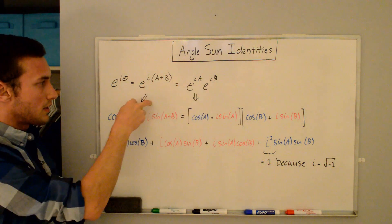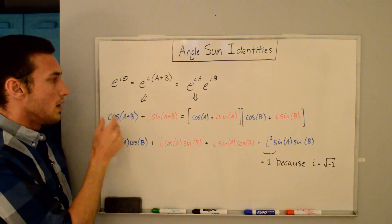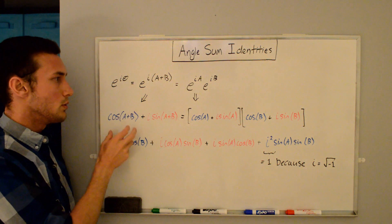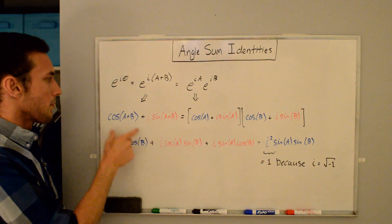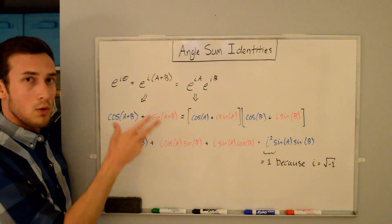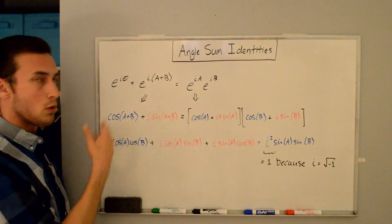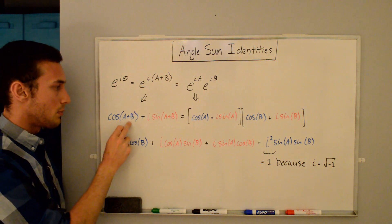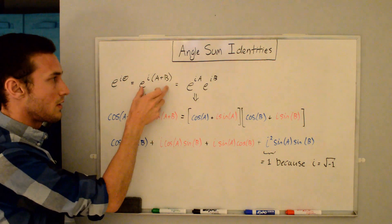And so I'm going to bring this down here, and I'm going to color code this so that all of the real parts are in blue and all of the imaginary parts are in red. So since we just took A+B for theta, I'm just going to plug it into the equation that we had on the previous board, the Euler's formula definition. And so now we're going to have cos(A+B) + i·sin(A+B). So that's this here.